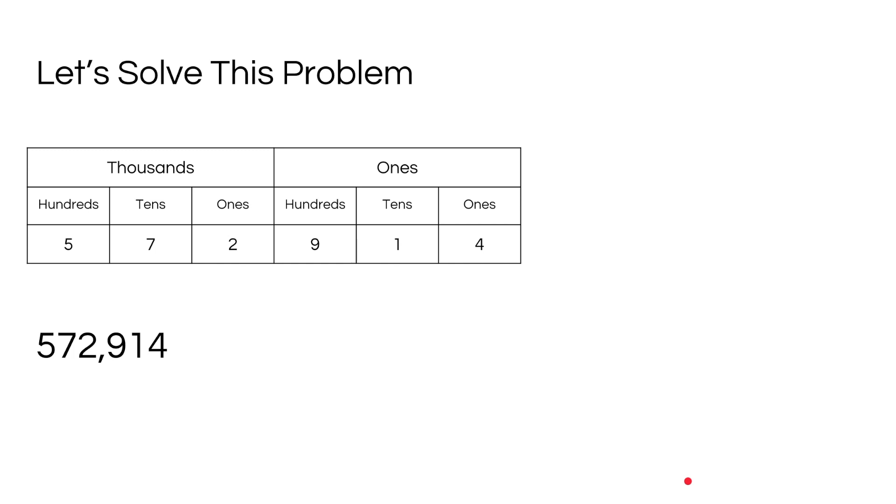So first, the 5 represents 500,000. So let's write that down. Now the value of 7, which is 70,000. The value of 2 is 2,000 in the thousands place. So let's add that as well.